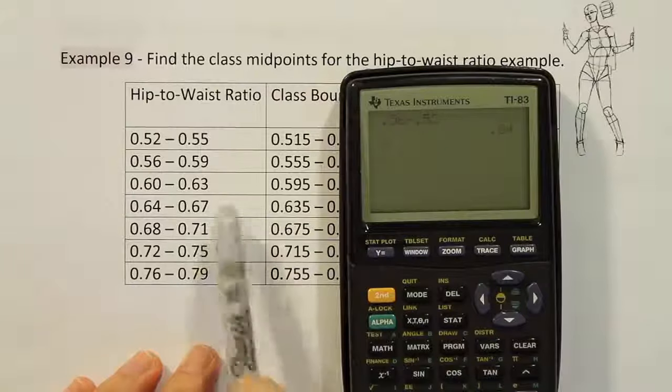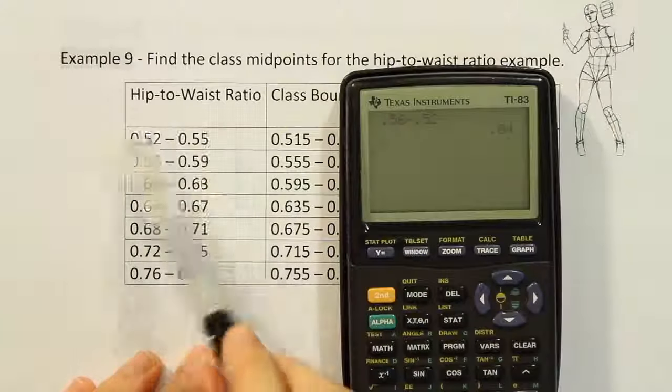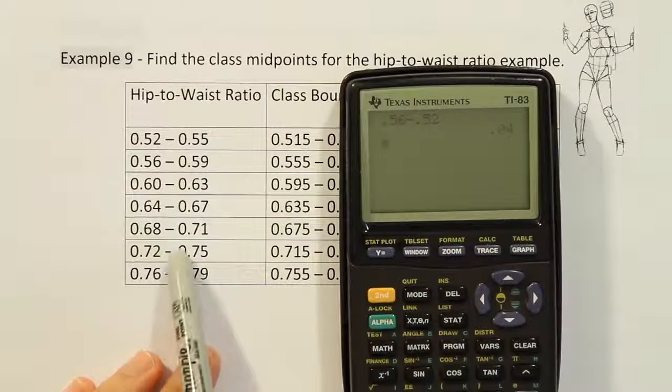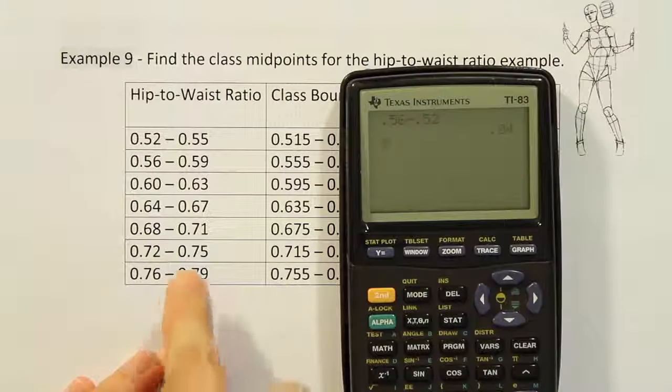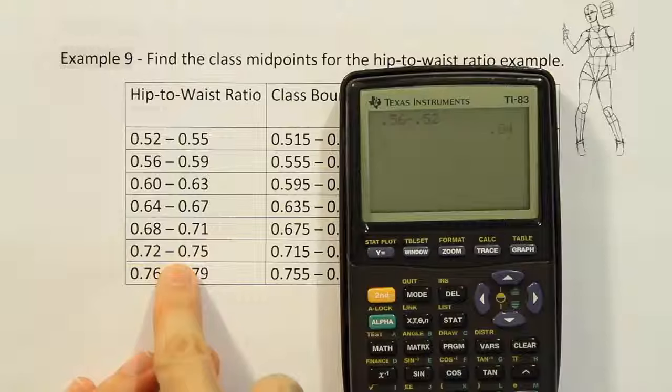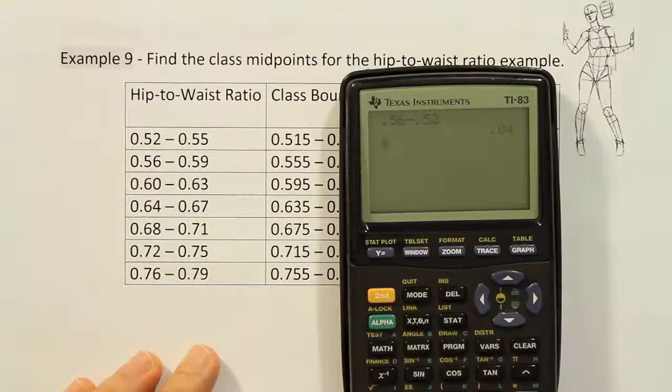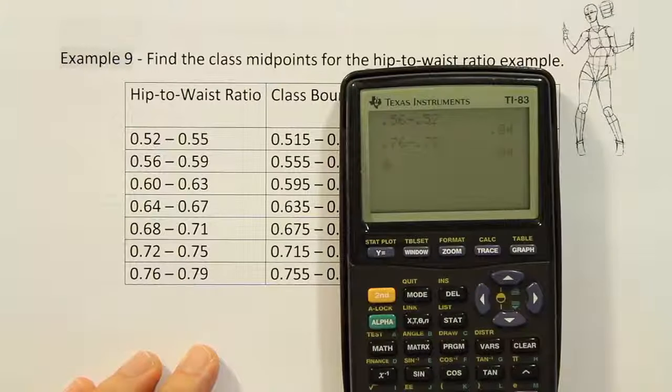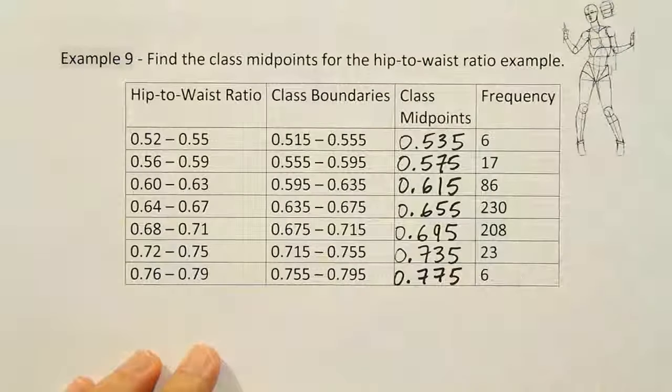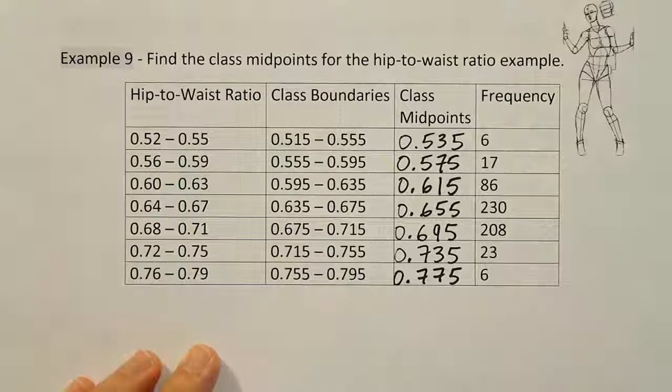Now this is finding class width when the table's already been created for you. So somebody else came up with what the class width should be here and all we're doing is identifying what they chose. So we can pick any two consecutive lower class limits. For example, 0.76 minus 0.72 will also produce that same 0.04, and then we can identify what the class width is for the table.